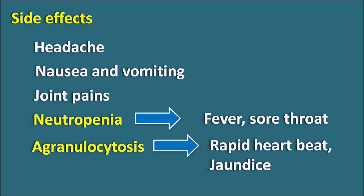In summary, propylthiouracil, methimazole, and carbimazole are the antithyroid agents belonging to the thiourelians. Propylthiouracil has a uracil structure, whereas carbimazole and methimazole have a thioimidazole ring system. These drugs inhibit iodination of tyrosine residues by inhibiting thyroperoxidase enzyme within the thyroid follicles. Propylthiouracil can also inhibit the peripheral conversion of T4 to T3, but it can produce hepatotoxicity, making it somewhat more toxic compared with carbimazole and methimazole.